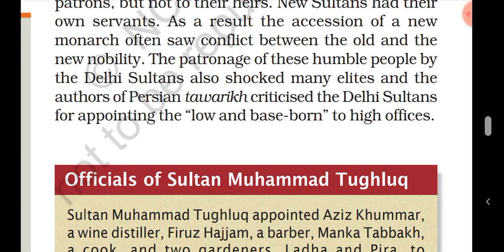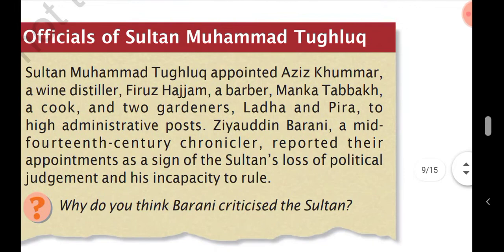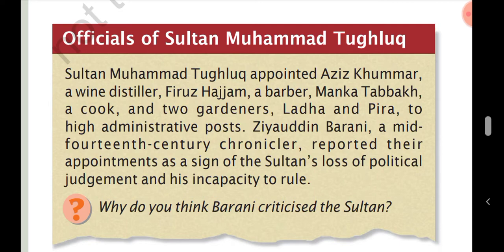The promotion of humble-born people by the Delhi Sultans shocked many allies and the authors of Persian Twariks, who criticized the sultans for appointing low-born people to higher offices. For example, Sultan Muhammad Tughlaq appointed Aziz Khummar — a wine distiller — Firuz Hajjam — a barber — Manka Tabakhi — a cook — and two gardeners, Ladha and Pira, to high administrative posts. The 14th-century chronicler Ziauddin Barani reported these appointments as a sign of the Sultan's poor political judgment.